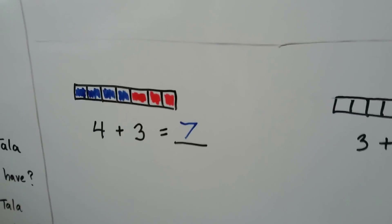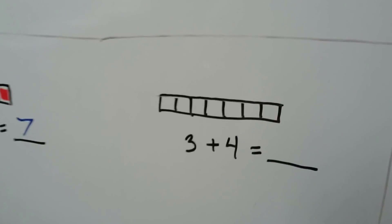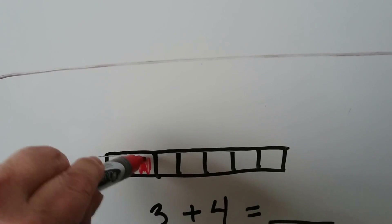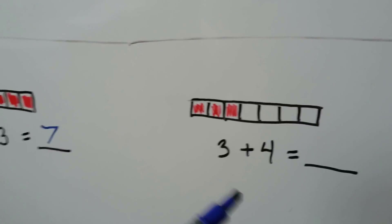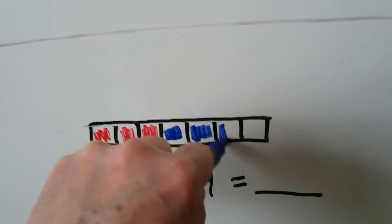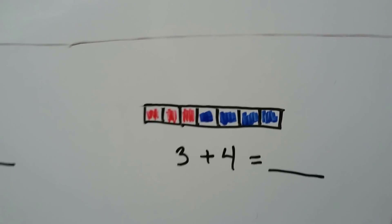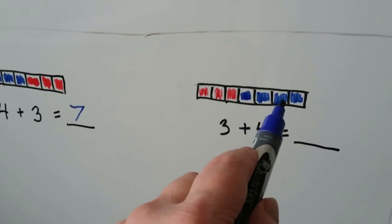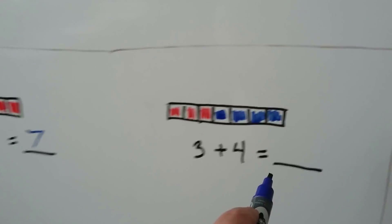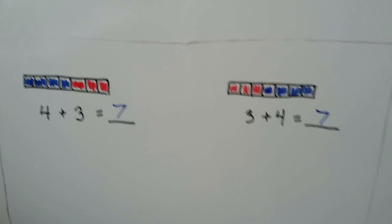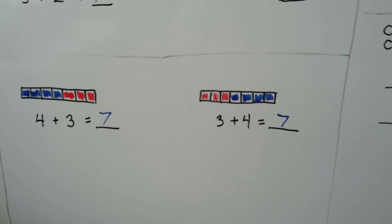We can change the order and color 3 red ones first, then put the 4 blue ones. How many squares are colored in? 1, 2, 3, 4, 5, 6, 7. It's still 7, even though we changed the order of the colors. The sum stays the same.